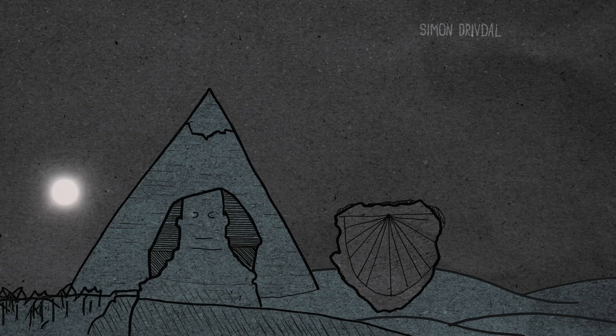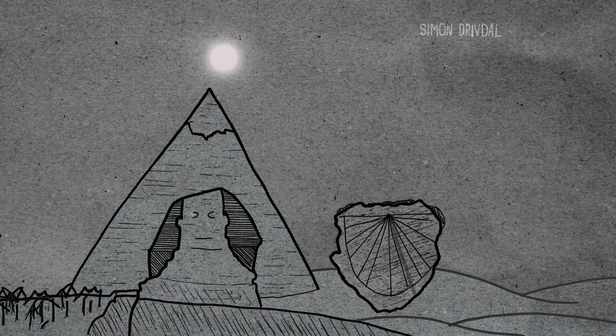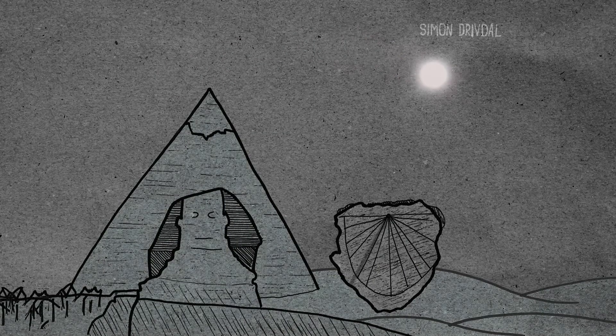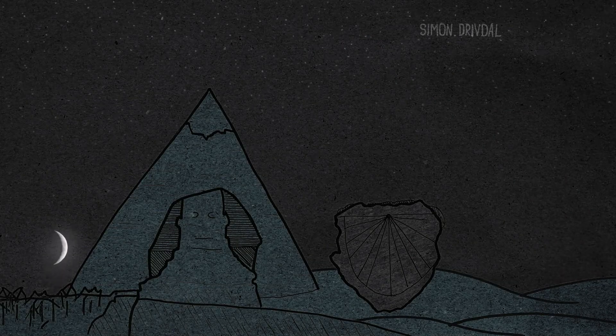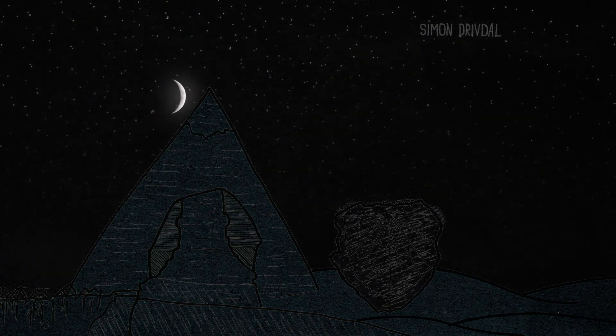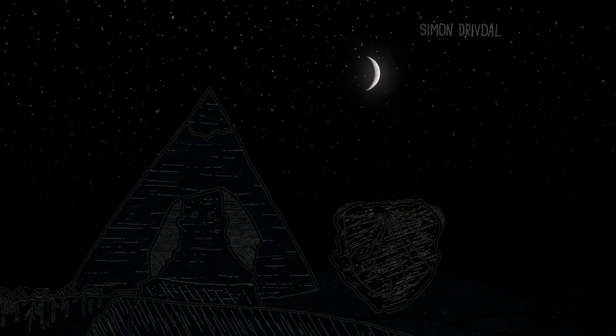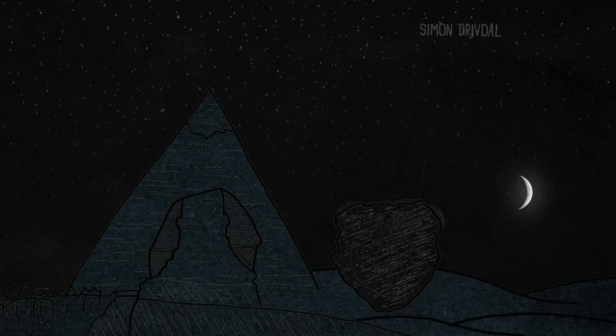Before clocks were invented, people measured the passage of days using shadow clocks and observing how the stars moved across the night sky. With no artificial light,